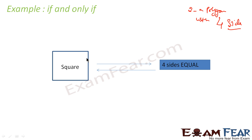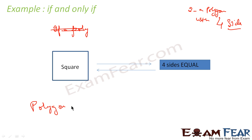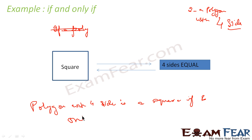In a polygon with four sides, if it is a square, that means its four sides are equal. If its four sides are equal, then it is a square. So we can say: a polygon with four sides is a square if and only if four sides are equal.